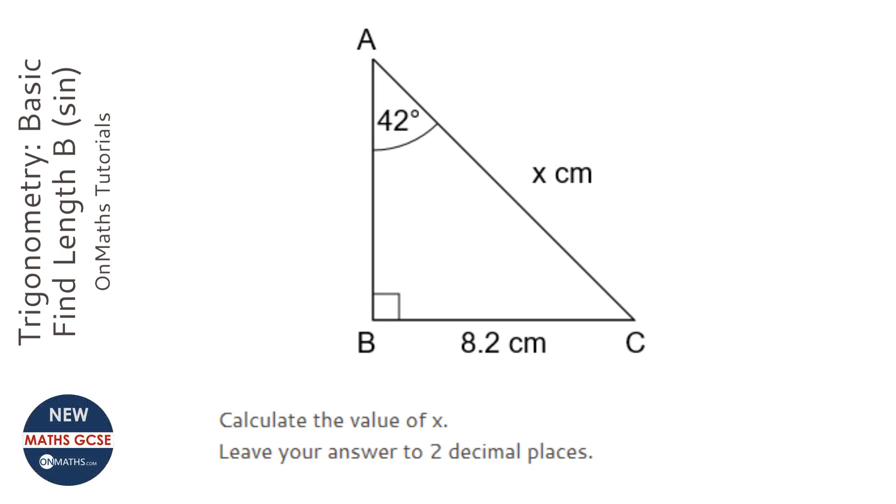So step one in trigonometry is you go to the right angle, go opposite it, and that is your hypotenuse. You should be used to that from Pythagoras. The second one to label is opposite the marked angle, the one given to you in the question, and that's labelled as the opposite.